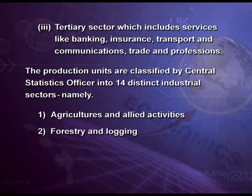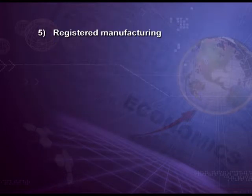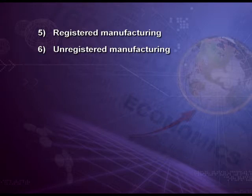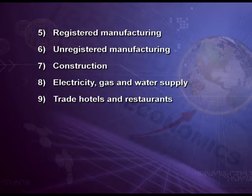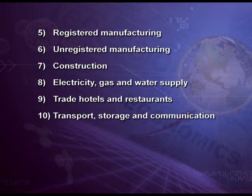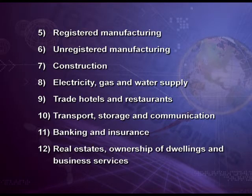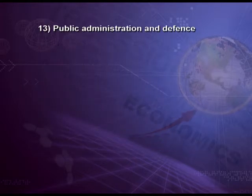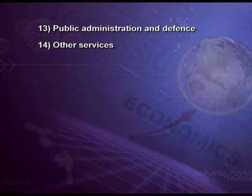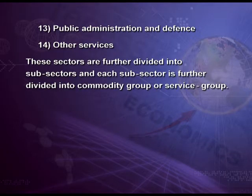The 14 industrial sectors classified by the CSO are: first, agriculture and allied activities; second, forestry and logging; third, fishing; fourth, mining and quarrying; fifth, registered manufacturing; sixth, unregistered manufacturing; seventh, construction; eighth, electricity, gas and water supply; ninth, trade, hotels and restaurants; tenth, transport, storage and communication; eleventh, banking and insurance; twelfth, real estate, ownership of dwellings and business services; thirteenth, public administration and defense; and fourteenth, other services. All 14 sectors are further divided into sub-sectors, and each sub-sector is further divided into commodity groups or service groups.